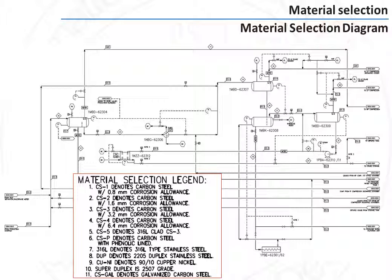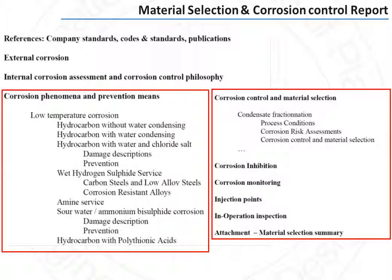The results are shown on the material selection diagram, which uses the PFD as background and indicates for each line which material of construction is selected. A more comprehensive report is issued by the materials and corrosion discipline, called the material selection and corrosion control report. This document has two parts. The first part lists all the corrosion phenomena, because there can be several different types — such as in a refinery or even an upstream facility — with different types of corrosion phenomena. The most common one in upstream facilities is corrosion due to acid water due to the presence of CO2, but there are numerous other corrosion phenomena.